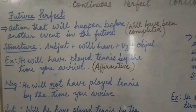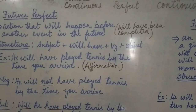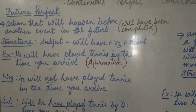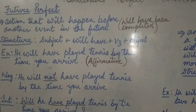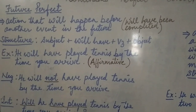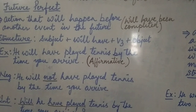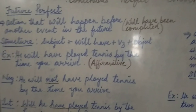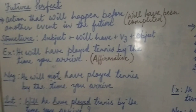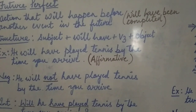Example of an affirmative sentence: He will have played tennis by the time you arrive. This action has not yet taken place — in the future, he will have played tennis by the time you arrive. That means the completion of playing tennis will occur in the future when you arrive.